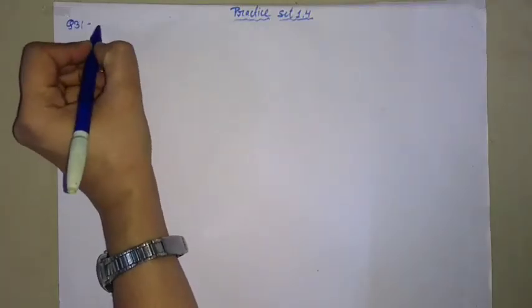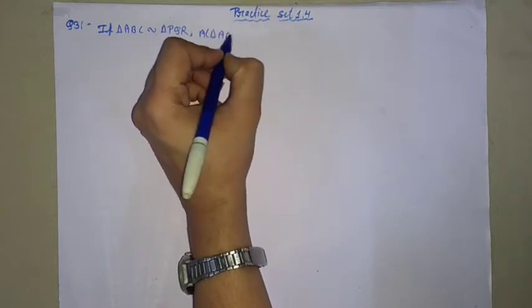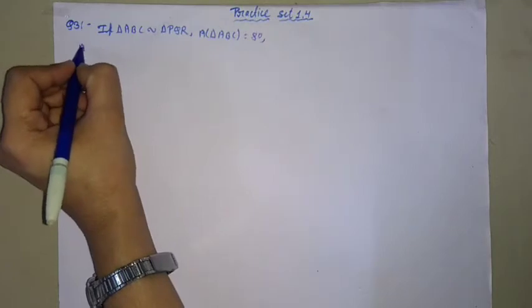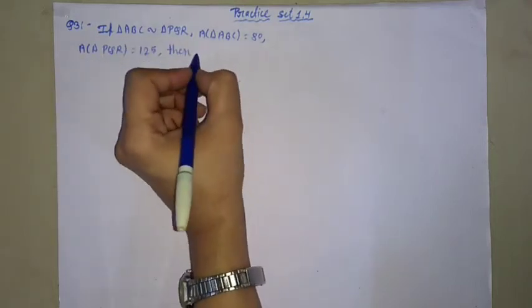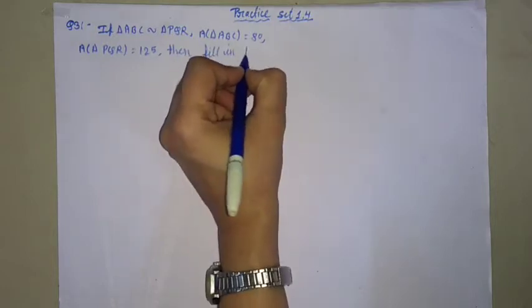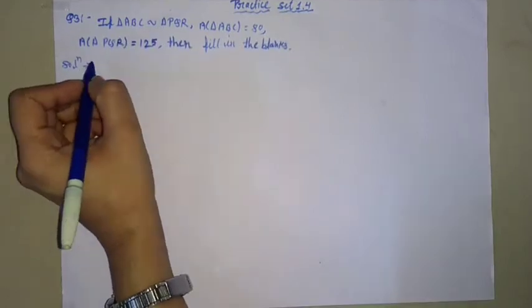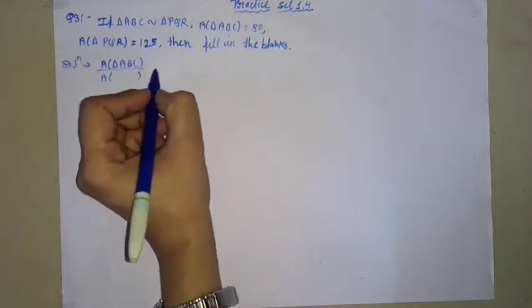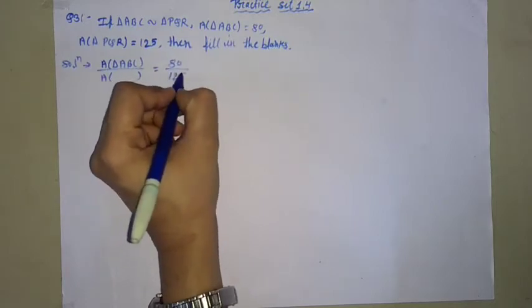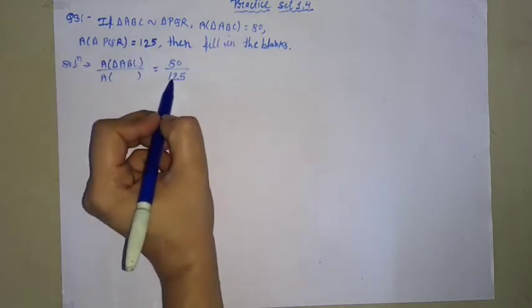Question number 3: If triangle ABC is similar to triangle PQR, area of triangle ABC equals 80 and area of triangle PQR equals 125, then fill in the blanks. Solution: Area of triangle ABC divided by area of triangle PQR equals 80 divided by 125.